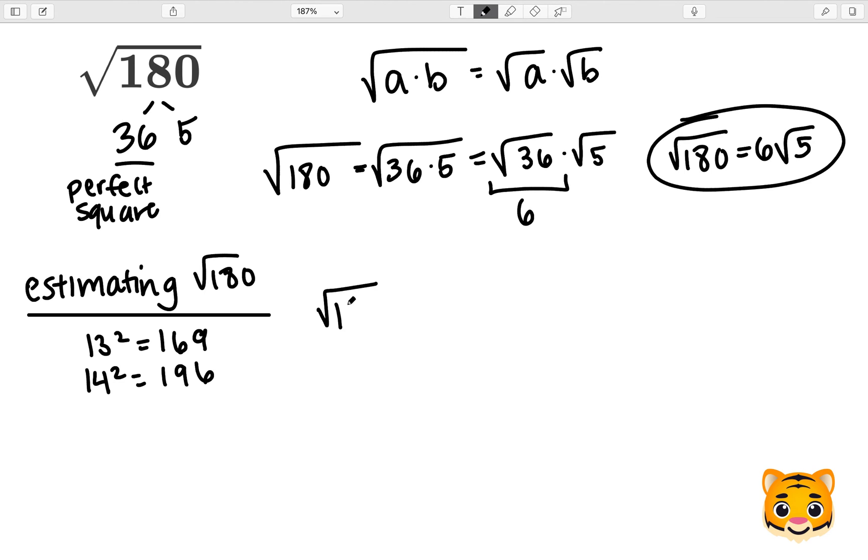The square root of 169 is less than the square root of 180 which is less than the square root of 196. Because 13 squared gives us 169, we can rewrite the square root of 169 as 13. And similarly, because 14 squared is 196, we can rewrite the square root of 196 as 14. We can now see that the square root of 180 is between 13 and 14.